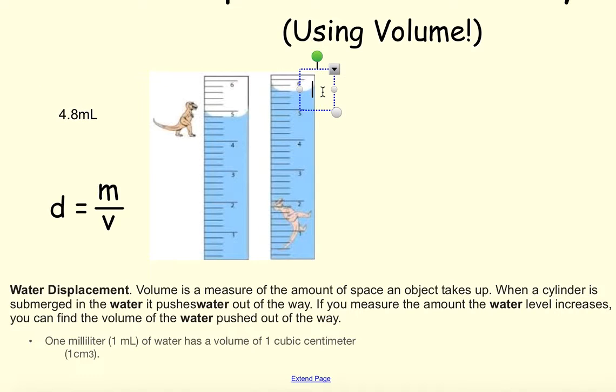And after here, once the dinosaur is submerged, it looks like it's 5.6 milliliters. Milliliters, there we go. Okay, so the volume is going to end up being the change in 5.6 minus 4.8, which then is going to give me 0.8 milliliters. There's our volume.